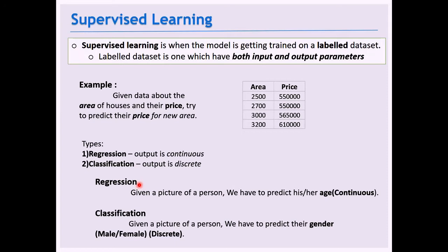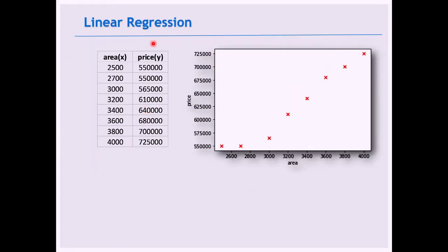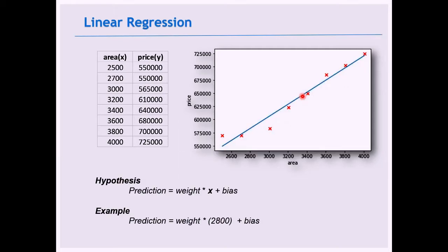In linear regression, given area vs. price data, we plot the data points and fit a linear relationship. The equation is y = Mx + C, where M is the weight (slope) and C is the bias. This linear line is our prediction. The difference between the actual data point and our prediction is the error we need to minimize.